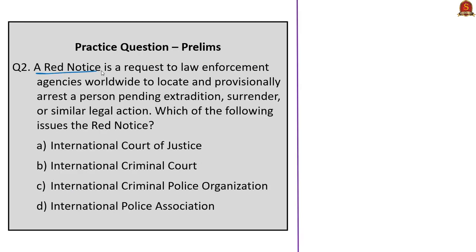The next question is about the red notice of Interpol: 'A red notice is a request to law enforcement agencies worldwide to locate and provisionally arrest a person pending extradition, surrender or similar legal action. Which of the following issues the red notice?' Options are: International Court of Justice, International Criminal Court, International Criminal Police Organization, and International Police Association. The answer is option C — Interpol, or the International Criminal Police Organization, issues the red notice.